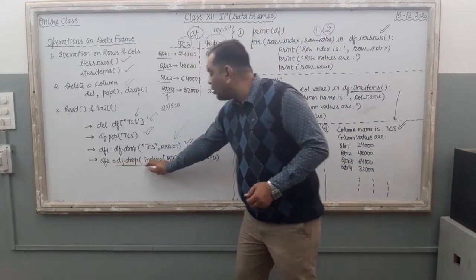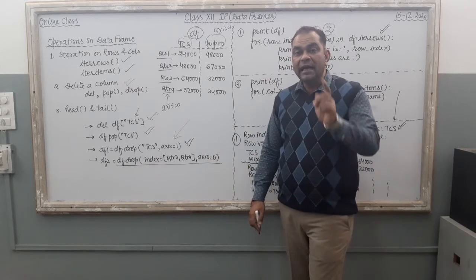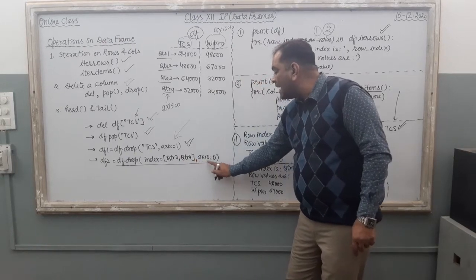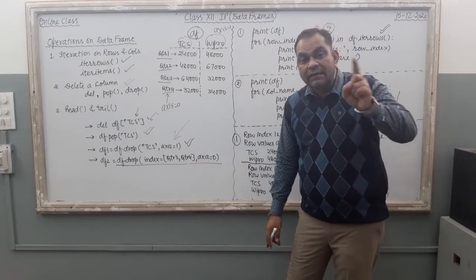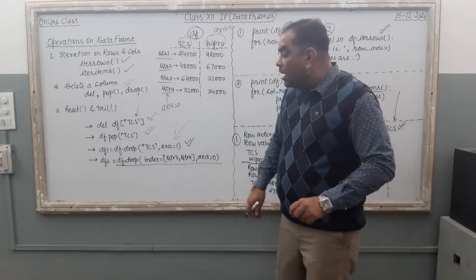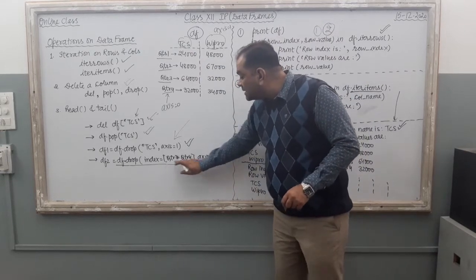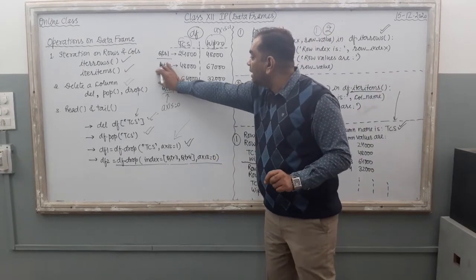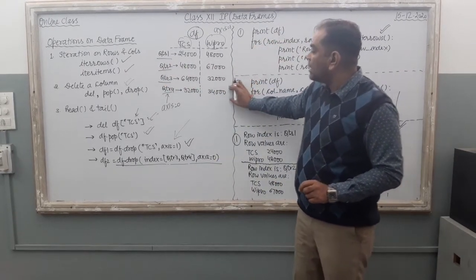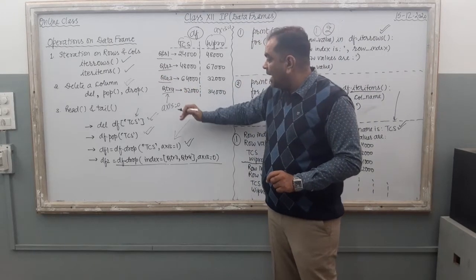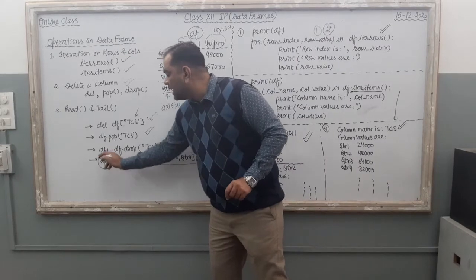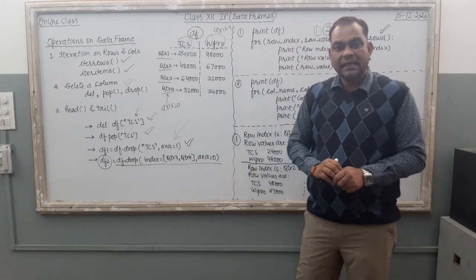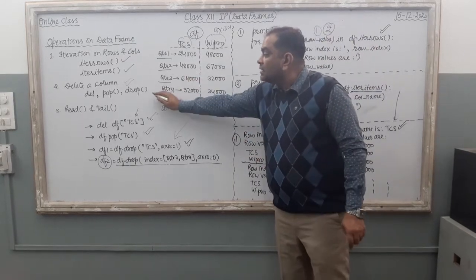You can also use the drop command with indexes to delete rows. df.drop(index=['Quarter3', 'Quarter4'], axis=0). Axis 0 means row indexes. The computer is going to remove these two rows from the DataFrame — Quarter 3 and Quarter 4 complete rows will be removed. The new DataFrame df2 contains only Quarter 1 and Quarter 2. So these are the delete operations.